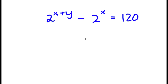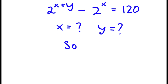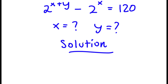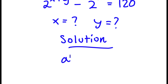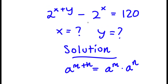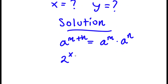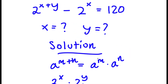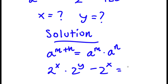In this problem I have 2 to the power of x plus y minus 2 to the power of x is equal to 120, and I want to find the values of both x and y. I'll start by using the property of exponents that states a to the power of m plus n equals a to the power of m times a to the power of n. So 2 to the power of x plus y can be rewritten as 2 to the power of x times 2 to the power of y, and I have this minus 2 to the power of x equals 120.